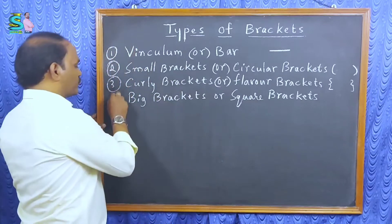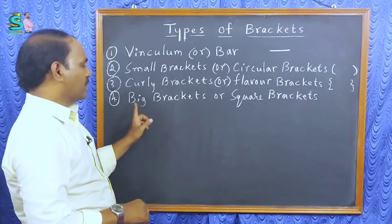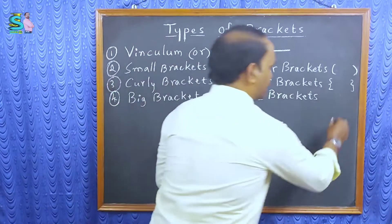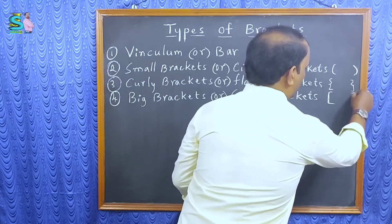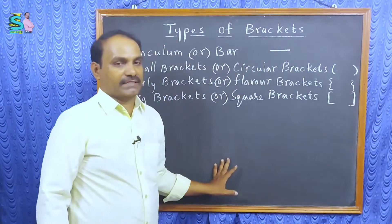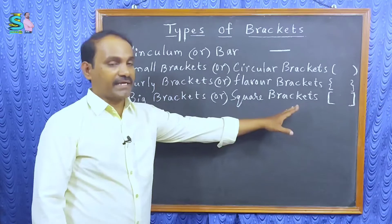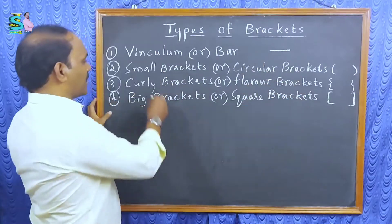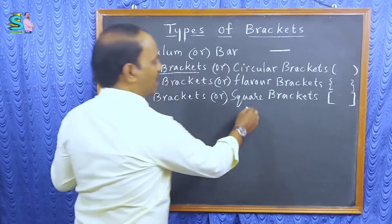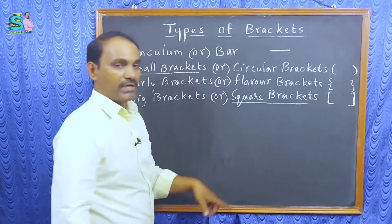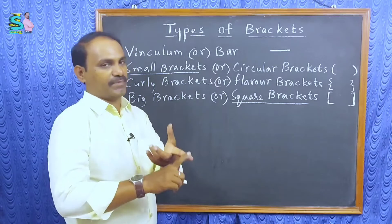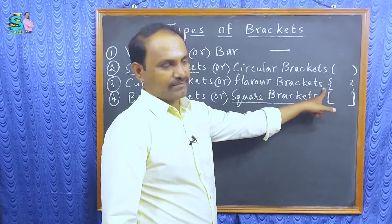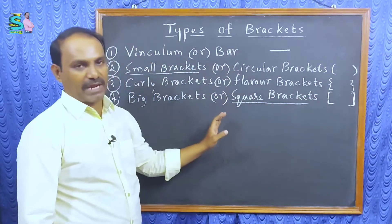Fourth one and largest brackets are big brackets or square brackets. This type of brackets also we use it in multiple choice questions. In set builder form, in set chapter, all sets are indicated with the flower brackets. This type of four brackets are there.